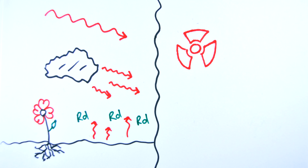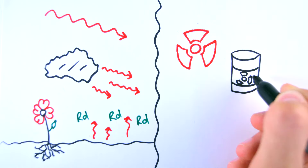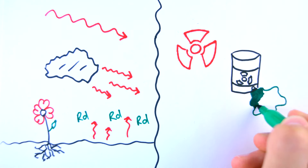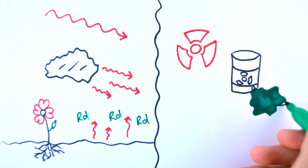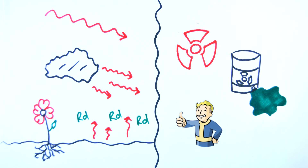However, human activity has added to the background radiation by creating and using artificial sources of radiation. These include radioactive waves from nuclear power stations, radioactive fallout from nuclear weapons testing, and medical x-rays.